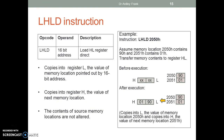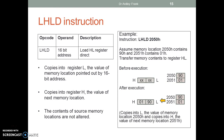LHLD: load HL register pair direct. Copies into register L the value of the memory location pointed by the 16-bit address, and copies into register H the value of the next memory location. The content of the source memory locations is not altered. Example: instruction LHLD 2050. Assume memory location 2050 contains 90 and 2051 contains 01. Before execution, HL contains an arbitrary value. After execution, L gets the value from memory location 2050 and H gets the value from memory location 2051.